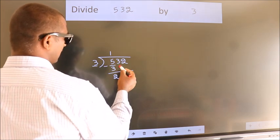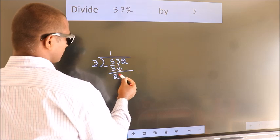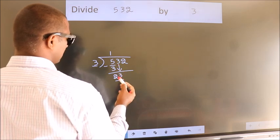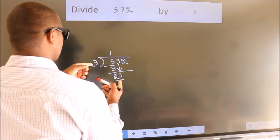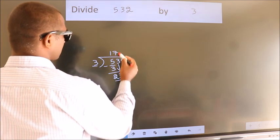After this, bring down the beside number. So, 3 down. So, 23. A number close to 23 in 3 table is 3 7s 21.